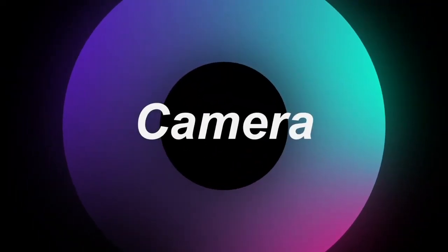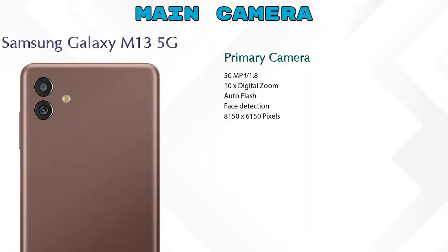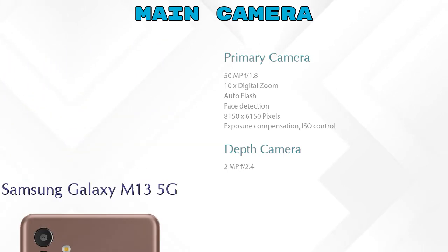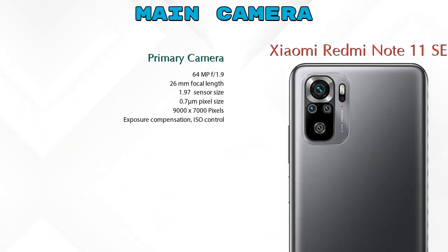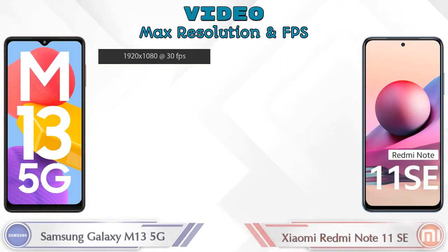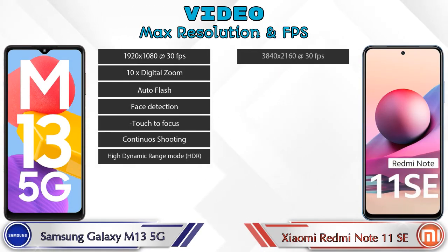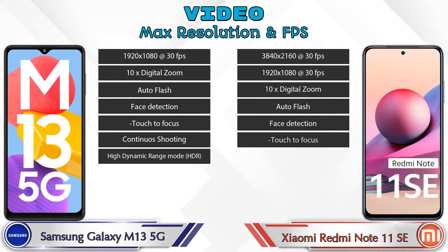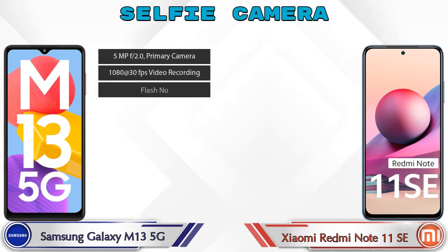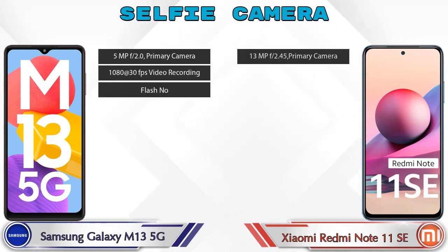Now let's talk about cameras. For the rear camera, the Galaxy M13 5G has two cameras — a primary camera and a depth camera. The Redmi Note 11 SE has four cameras — a primary camera, an ultra-wide angle camera, a macro camera, and a depth camera. For video, the Galaxy M13 5G has seven different features and the Redmi Note 11 SE has eight. Both phones have a single front selfie camera with three different features.